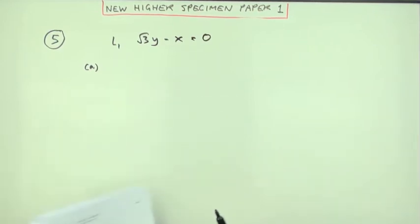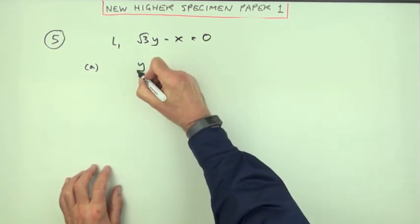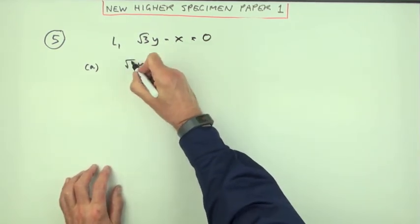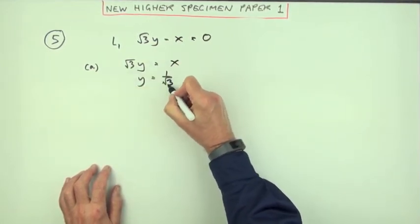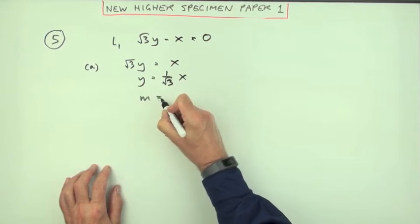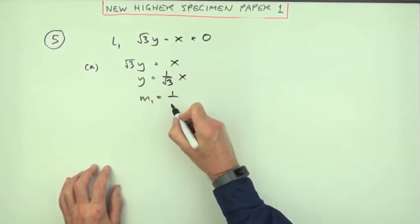Well, it means I just need to know what the gradient of line one is. So rearranging that would be √3y equals x, and then dividing by √3, that's 1/√3 times x, where I can extract its gradient, the coefficient of x, as 1/√3.